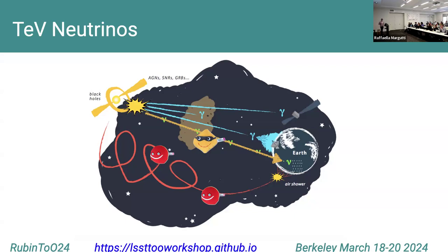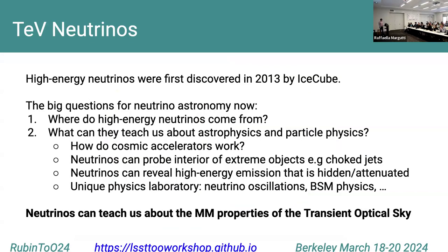This may seem challenging, but we have additional messengers. The neutrino is a fundamental particle that is not electrically charged, which means it travels in straight lines and doesn't interact very much. It can travel through dust, through the Earth, and eventually reach us. Neutrinos can therefore point back directly to these cosmic accelerator sites. High-energy neutrinos were predicted for a long time but have only been known about for 11 years, first discovered by the IceCube Neutrino Observatory in 2013.